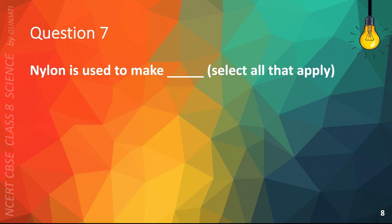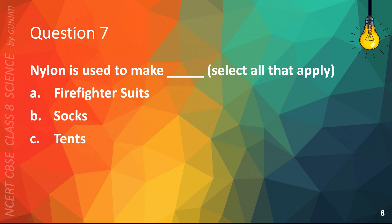Question 7. Nylon is used to make blank — select all that apply. A. Firefighter suits, B. Socks, C. Tents, or D. Wool clothes. The correct answer is B. Socks and C. Tents.